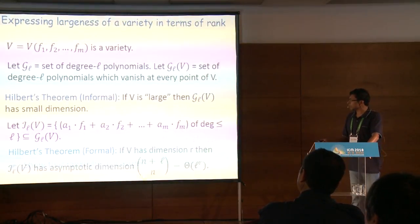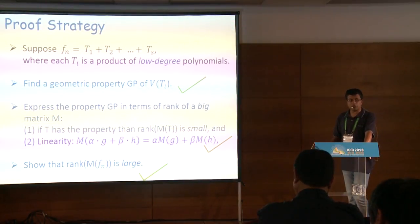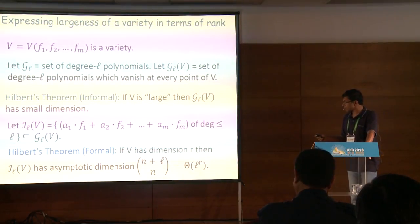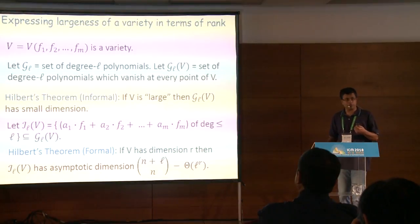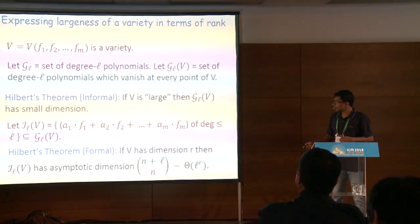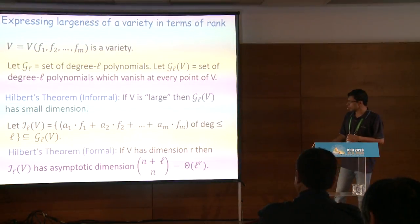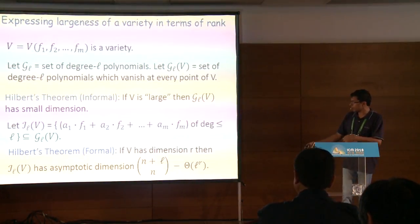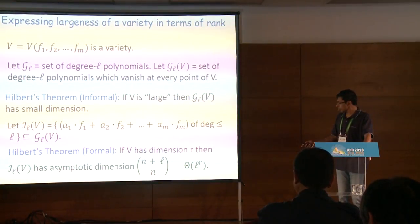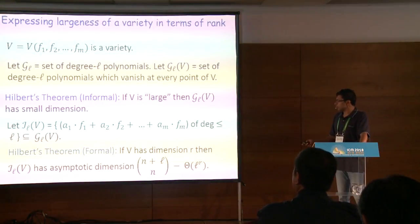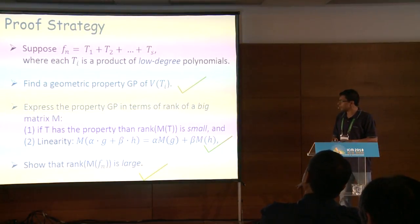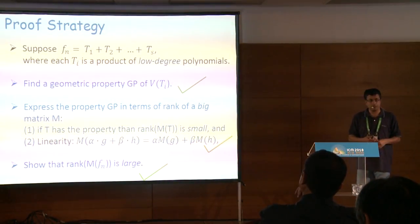What Hilbert showed is that if the variety V has high dimension — dimension R — then IL(V) is small in an asymptotic sense: its dimension as a vector space is the maximum possible minus something that asymptotically grows like L^R. This also gives a map from sets of polynomials to matrices: take a vector space basis of IL(V), arrange them as rows of a matrix, and the dimension of the vector space equals the rank of the matrix. However, Hilbert's asymptotic estimates are not precise enough for us — we need much more concrete bounds for our specific small values of L, and that can be done, giving us the proof.